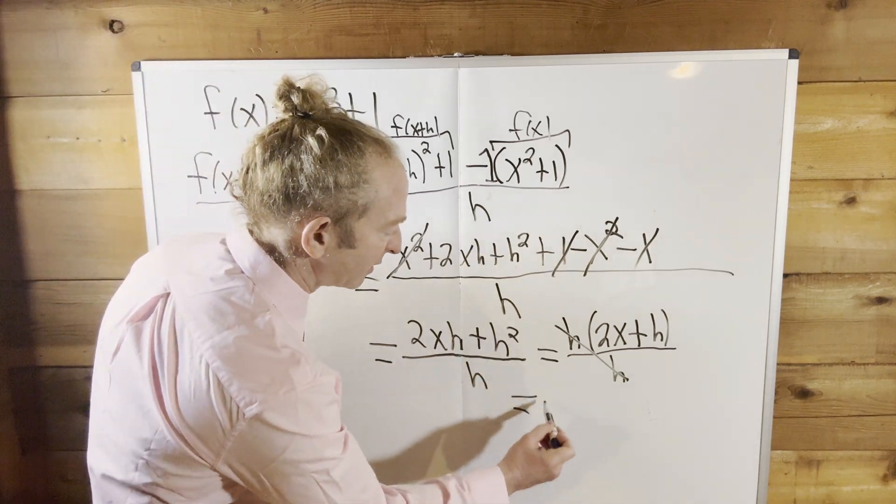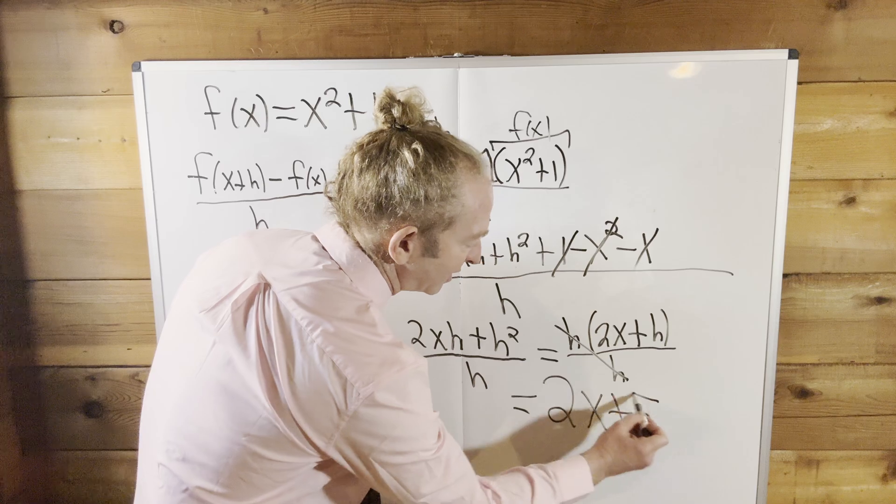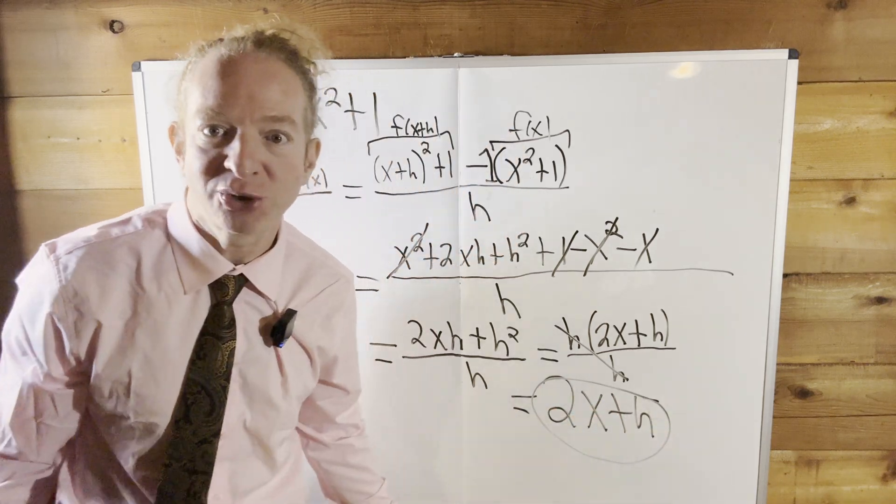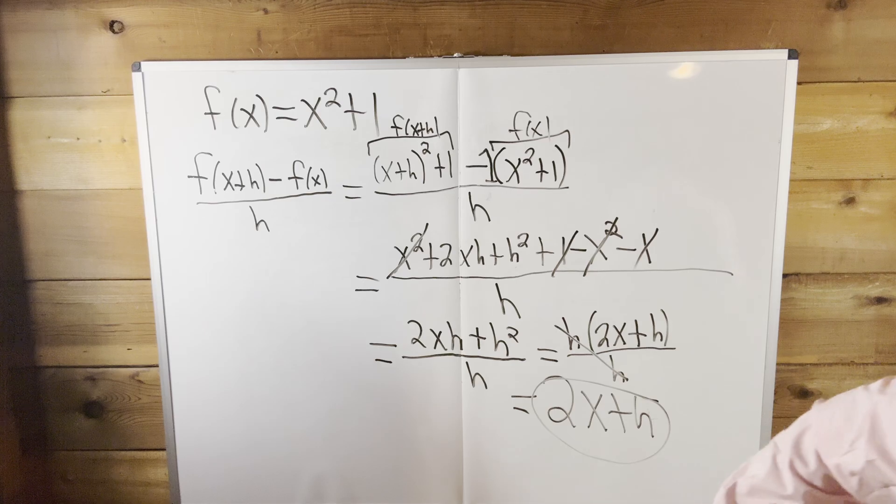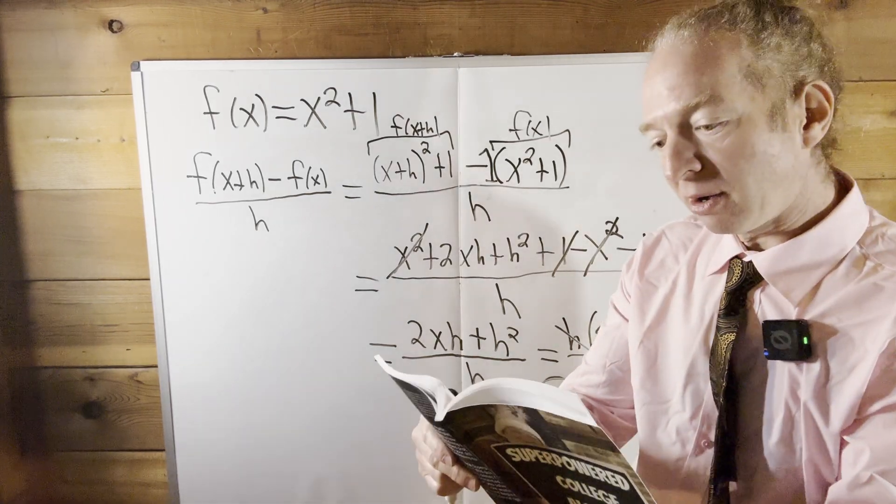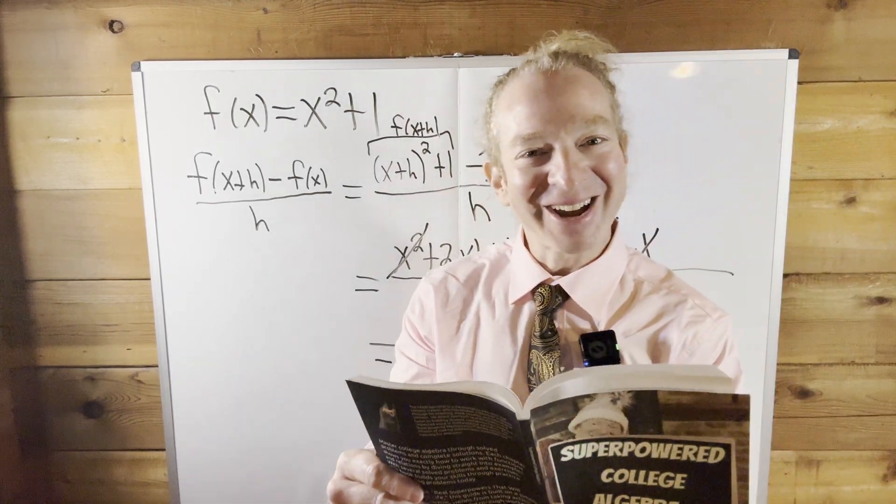So the final answer is 2x, right? A little bit bigger so you can see it. Plus h. And that should be the final answer. I'm pretty sure that is 100% correct. Let me grab my book and see if it is correct. So it is. It's correct. We did it right.